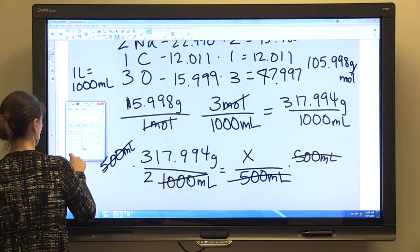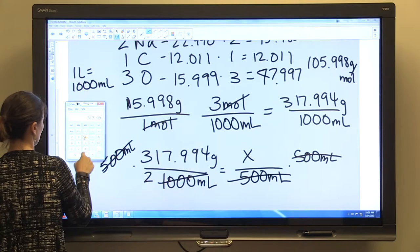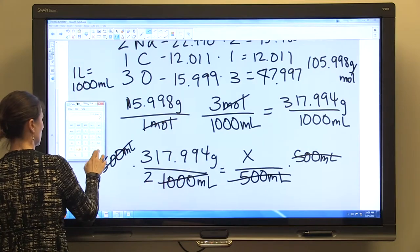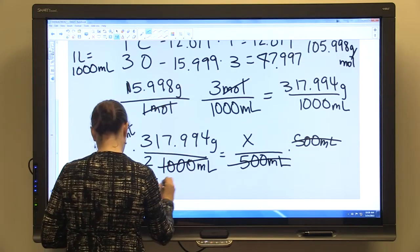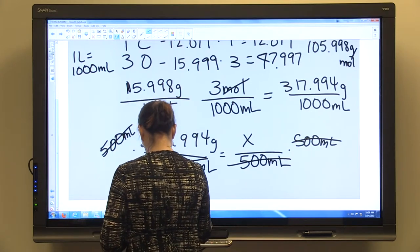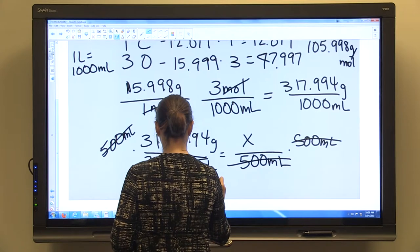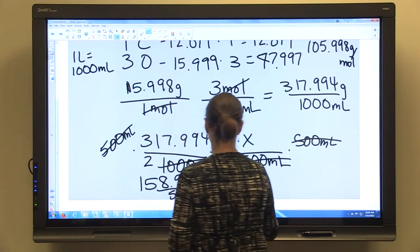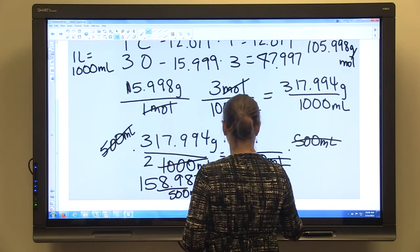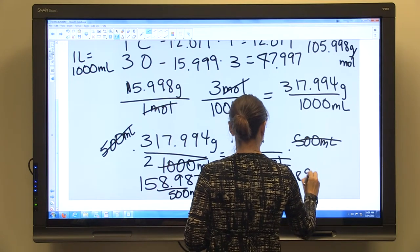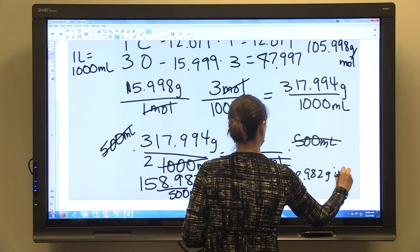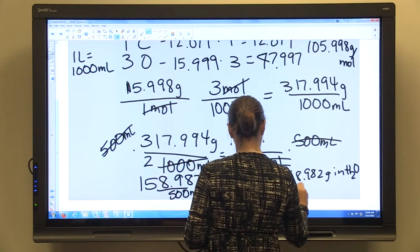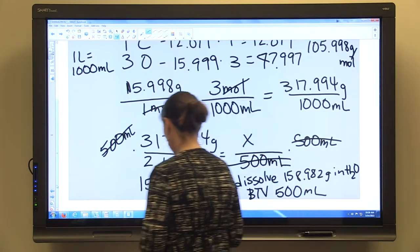What we'll have is 317.994 divided by 2, which is 158.982 grams per 500 milliliters. And so you'll dissolve 158.982 grams in water and bring to volume 500 milliliters.